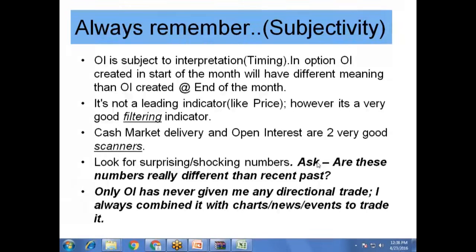OI alone has never given me a trade. I always combined it with charts. The first thing I look at is the charts, whether there is news related to this industry or stock or events, and then I jump on the trade. I look at my risk-reward scenario and then I take the trade or I don't. Look for surprising and shocking numbers and you will get a really good setup. If the numbers are not shocking, you will get a decent setup, but based on OI only, don't look for trades. Try to get deeper into it — what is the chart saying, what is the news saying, what events are about to happen — and then try to make a trade.